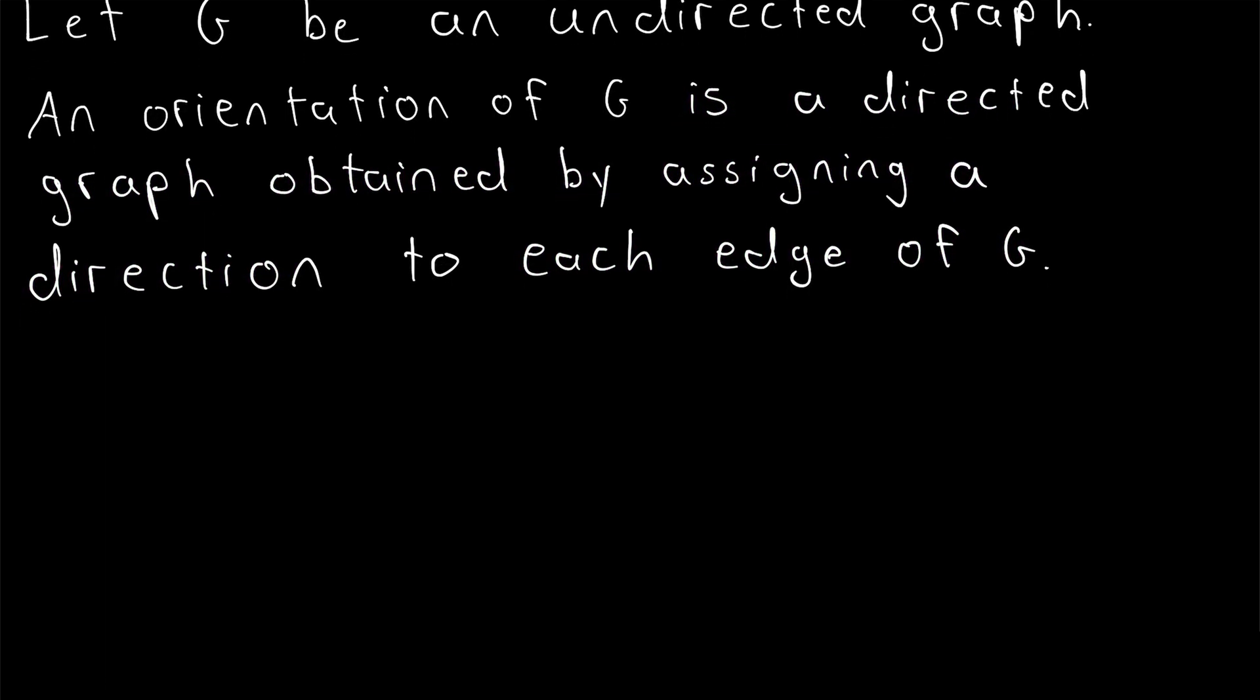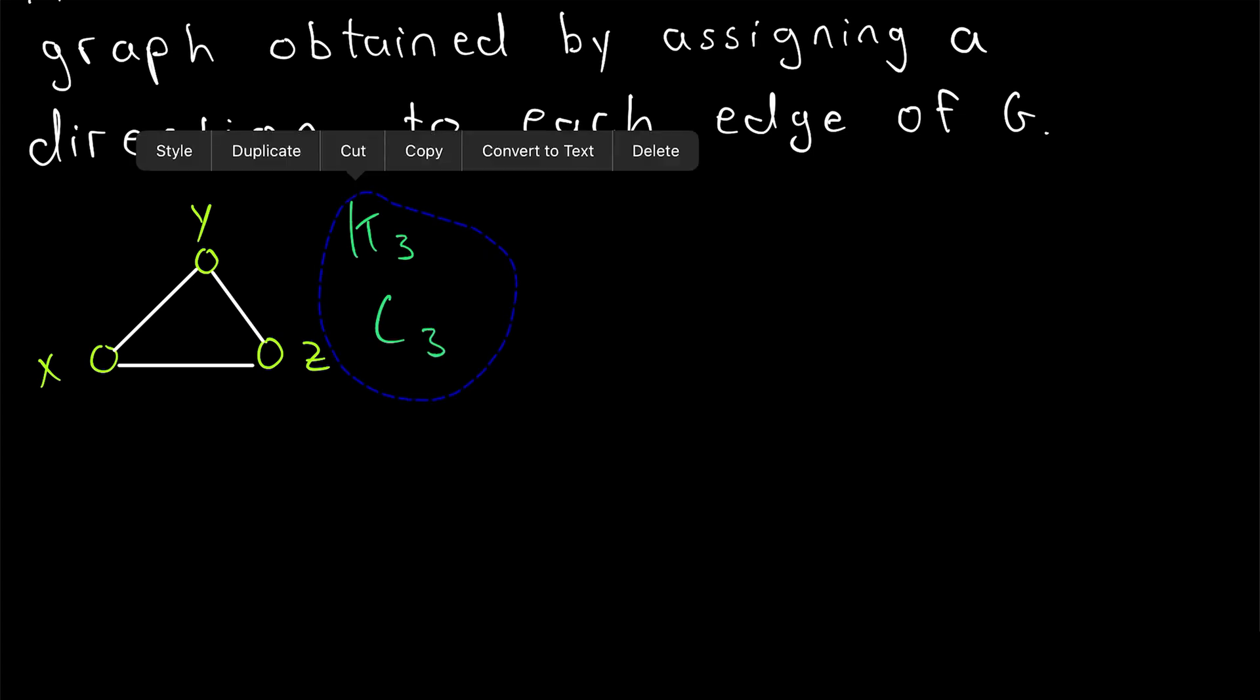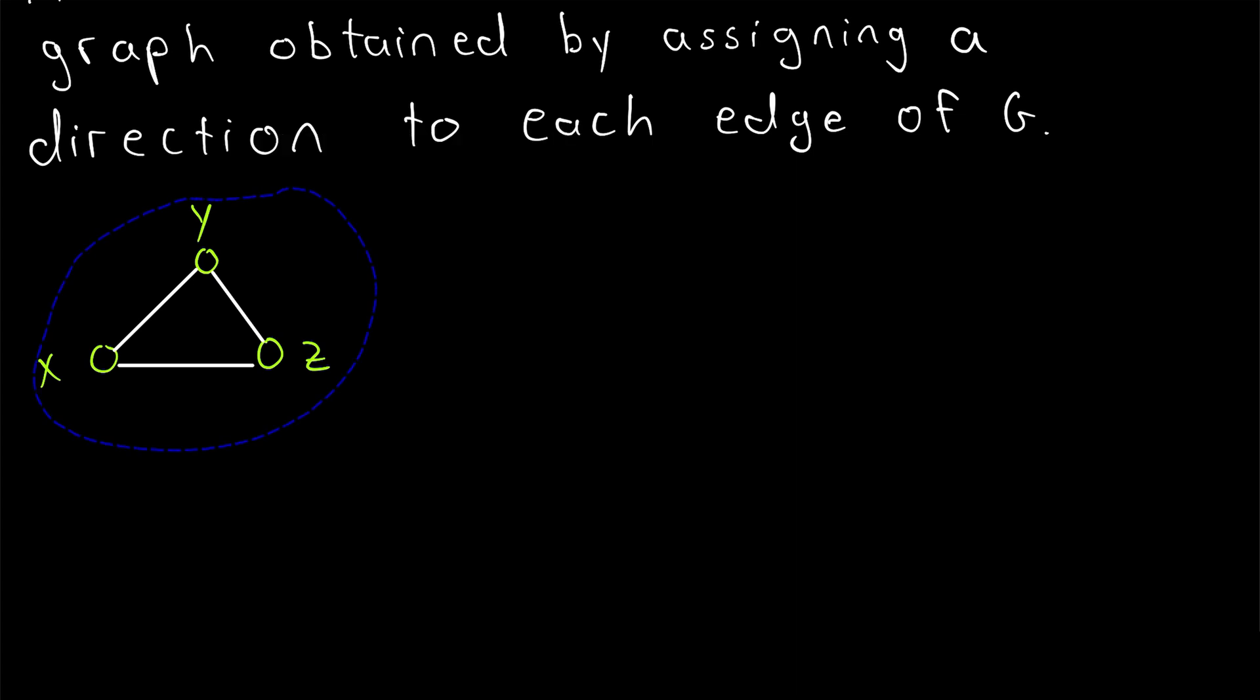So this is just a way of going from an undirected graph to a directed graph. Let's check out an example. Here we've got an undirected graph. This is of course the complete graph on three vertices, and it's also a cycle with three vertices. Let's go ahead and copy and paste it to take a look at an orientation of this graph.